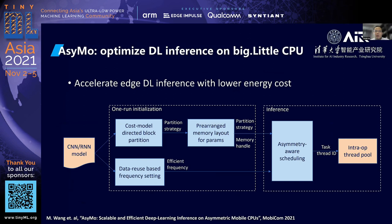To optimize deep learning inference on big.LITTLE CPUs, we propose ESMO, a system to accelerate performance. The key idea is that we build a cost model to determine a better workload partition scheme. We also pre-arrange the memory layout to reduce memory copy overhead. For mobile devices like smartphones, we also care about energy cost, so we propose a data-reuse-based frequency-setting approach to find a more energy-efficient frequency setting. During inference, we design an asymmetry-aware scheduling approach to better schedule workloads.